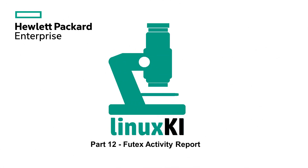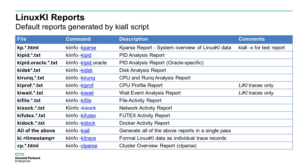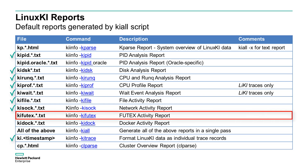Hello, and welcome to part 12 of the Linux KI video series. In this session, we'll be reviewing the Futex Activity Report, which provides wait and wake-up statistics for fast user space mutexes. The Futex Activity Report is generated by the KI-ALL script. Previous sessions covered the various reports designated by the checkmarks. The Futex Activity Report can be found in the .txt file beginning with KI-Futex.